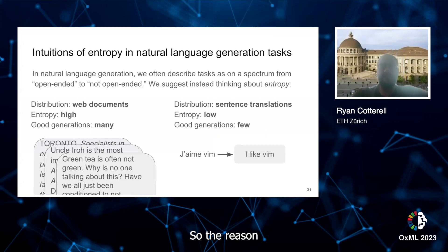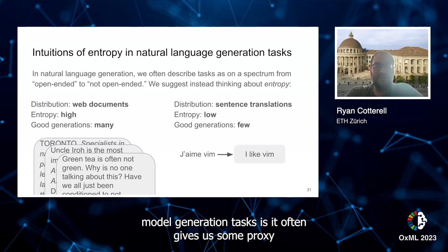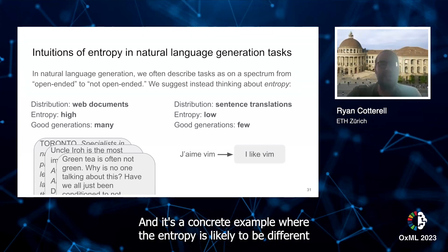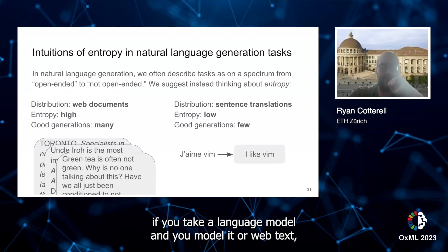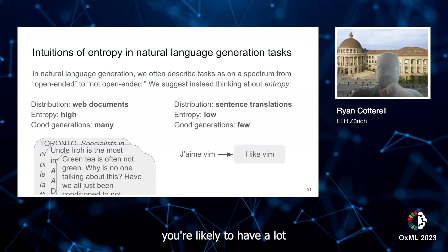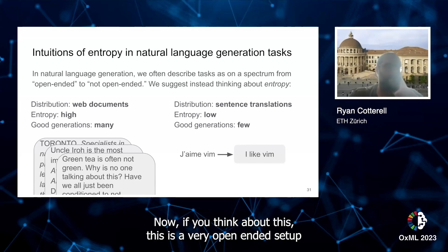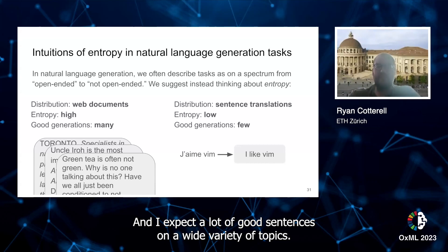The reason we like entropy when discussing language model generation tasks is that it often gives us some proxy for how interesting or how varied the text that comes back is likely to be. A concrete example where entropy is likely to differ between generation tasks: if you take a language model trained on web text, you're likely to have a lot of really good sentences you'd like to see pop out. This is a very open-ended setup where you'd generate text and ask what's good and what's bad, and you'd expect a lot of good sentences on a wide variety of topics.